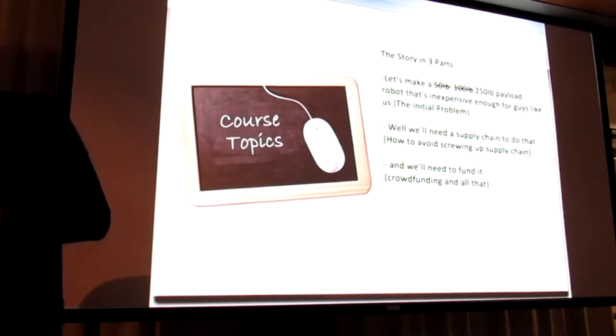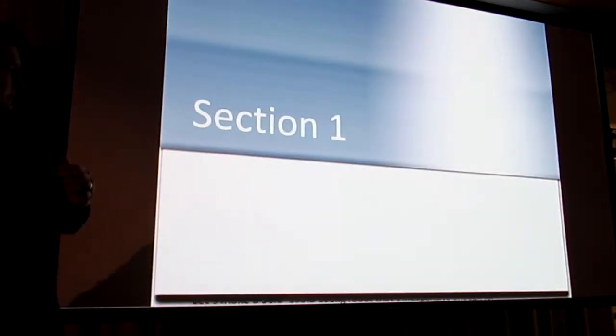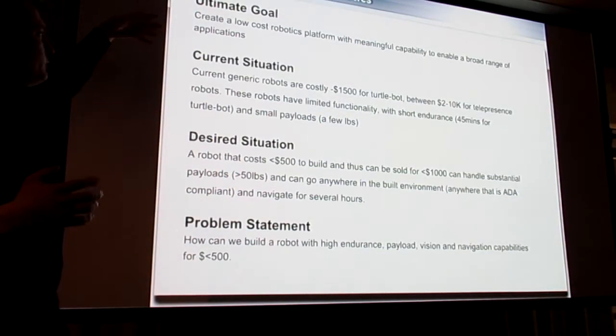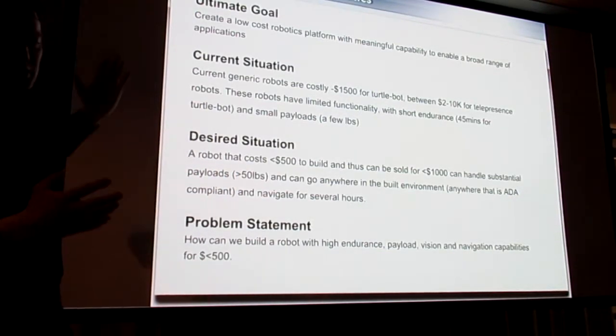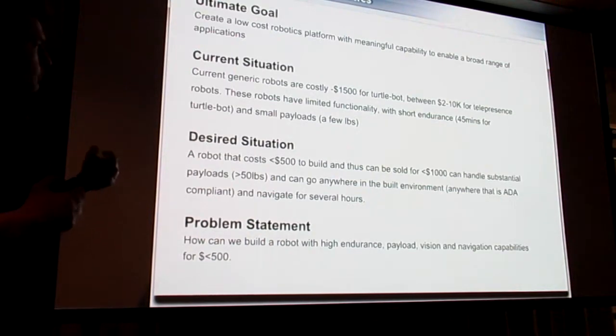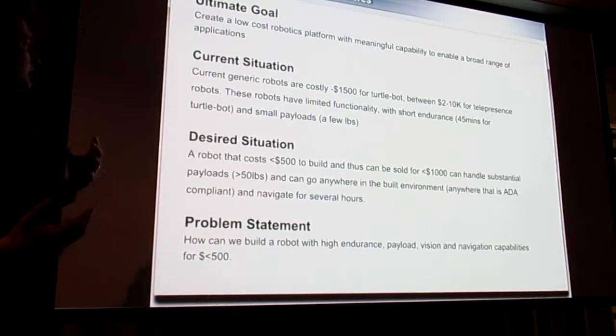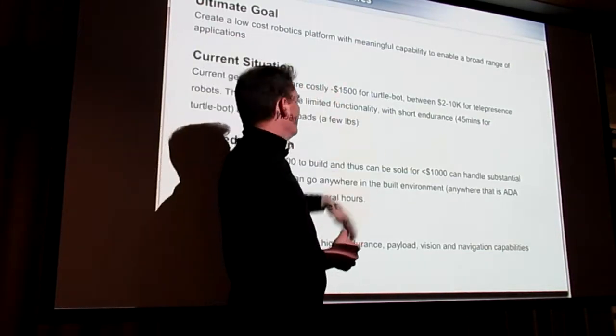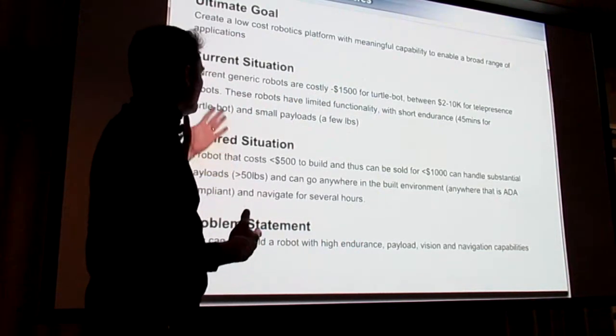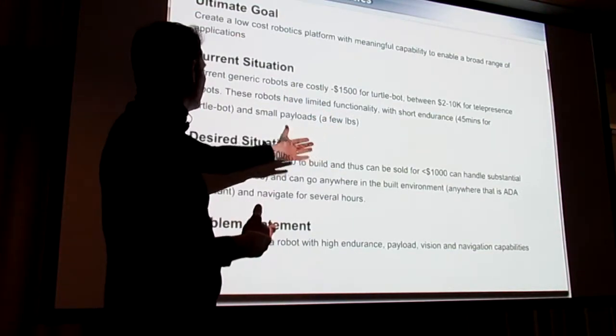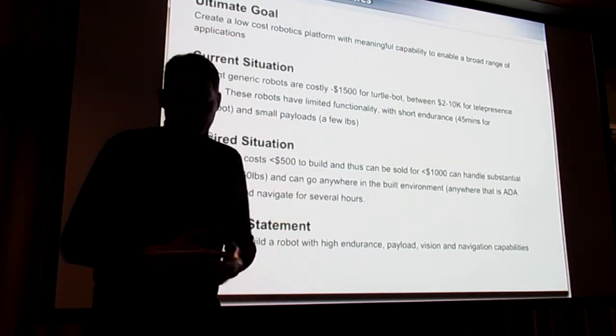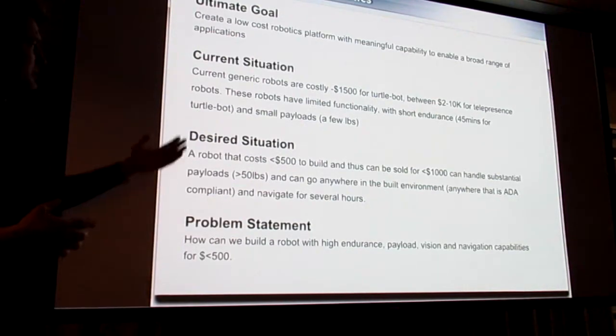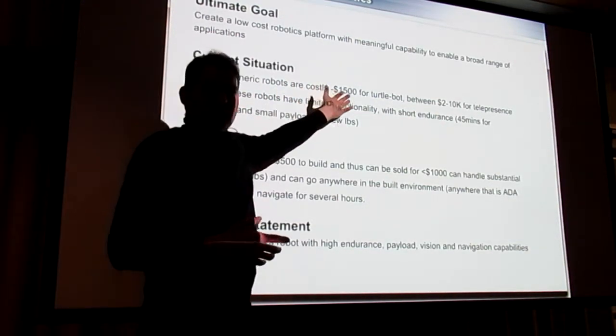Ubiquity Robotics started with this problem statement. Create a low cost robotics platform with meaningful capability to enable a broad range of applications. Why did we want to do that? Well, current generic robots cost about $1500 for TurtleBot, and those robots have limited functionality with short endurance, 45 minutes, and small payload, only a few pounds.